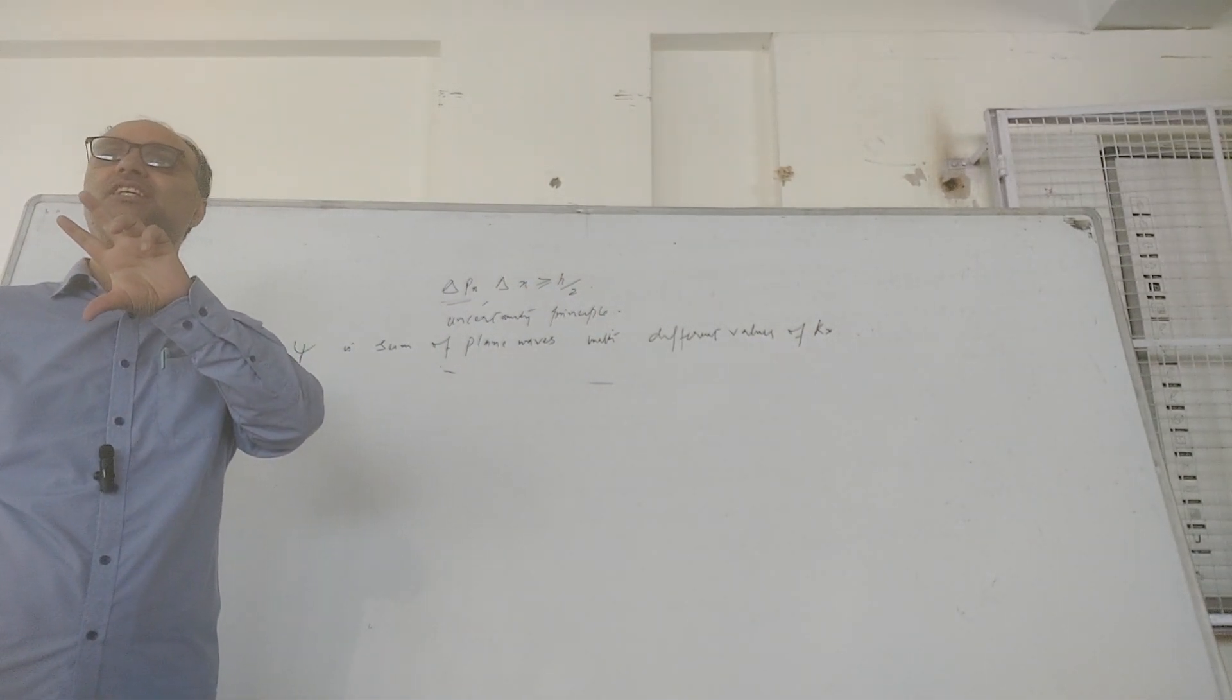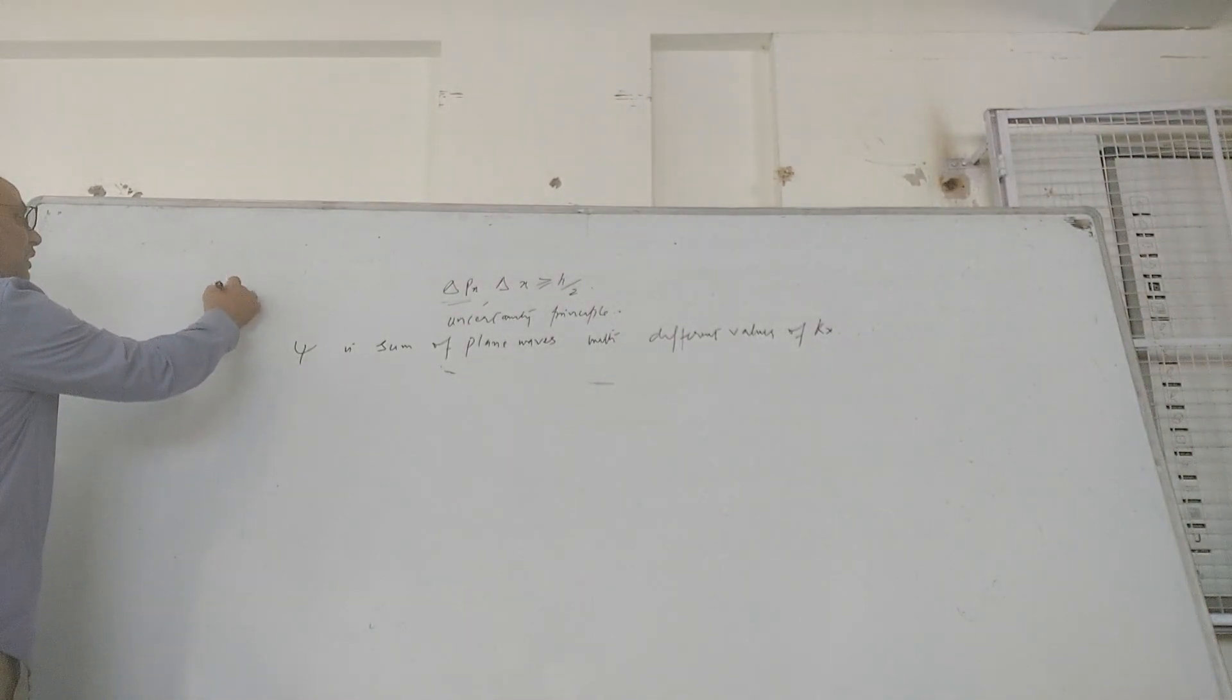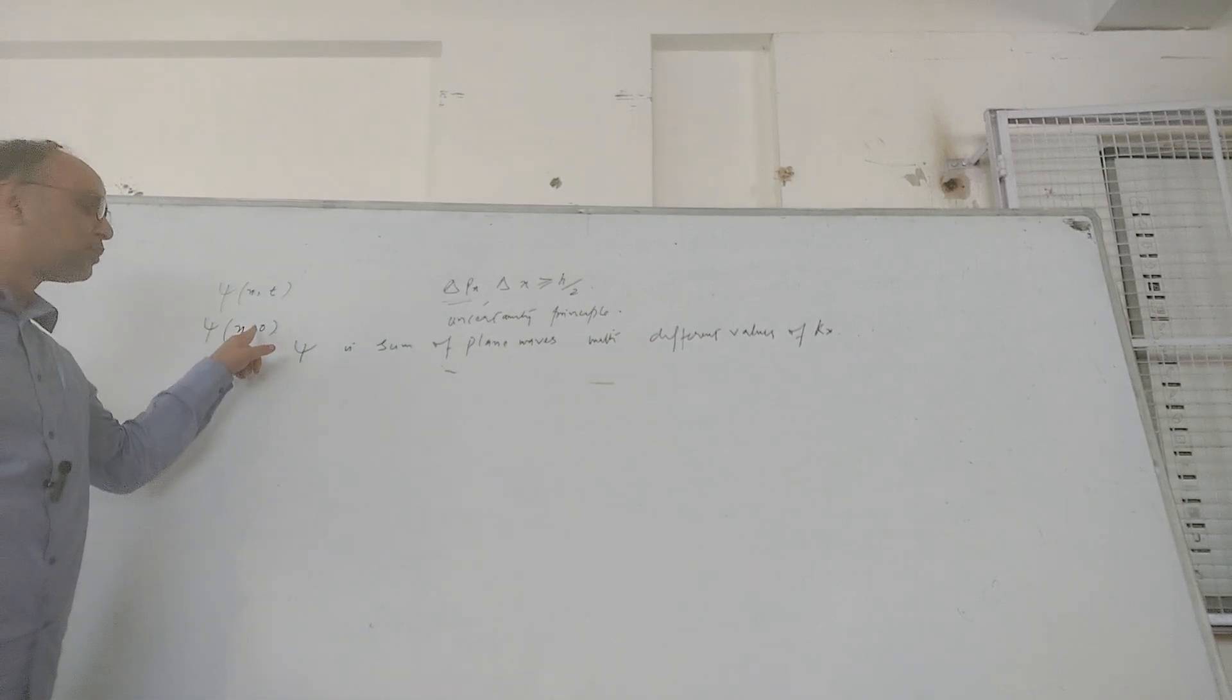So we start with psi x0. Even though that was a complex wave, we could start at time t equals 0. So psi we started with sometimes at time t equals 0, this wave is a complex wave.